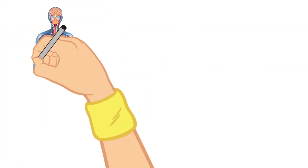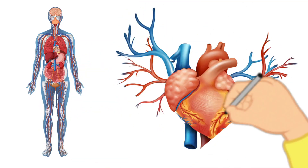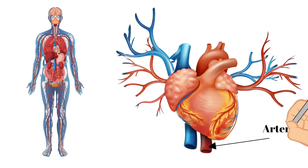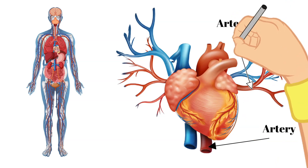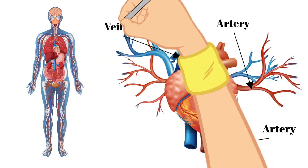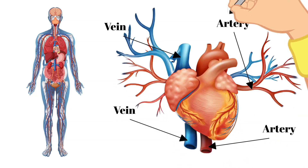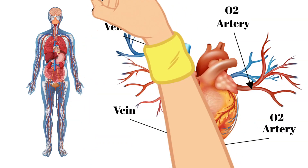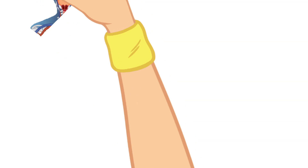This brings us to the blood vessels, which are called arteries and veins. These are tubes that are attached to the heart that the blood moves around your body through. The blood vessels that carry blood away from the heart are called arteries, and the blood vessels that carry blood back to the heart are called veins. So arteries typically carry oxygenated blood to the body and veins typically carry deoxygenated blood back to the heart. There are a few exceptions to this but this is generally the rule.